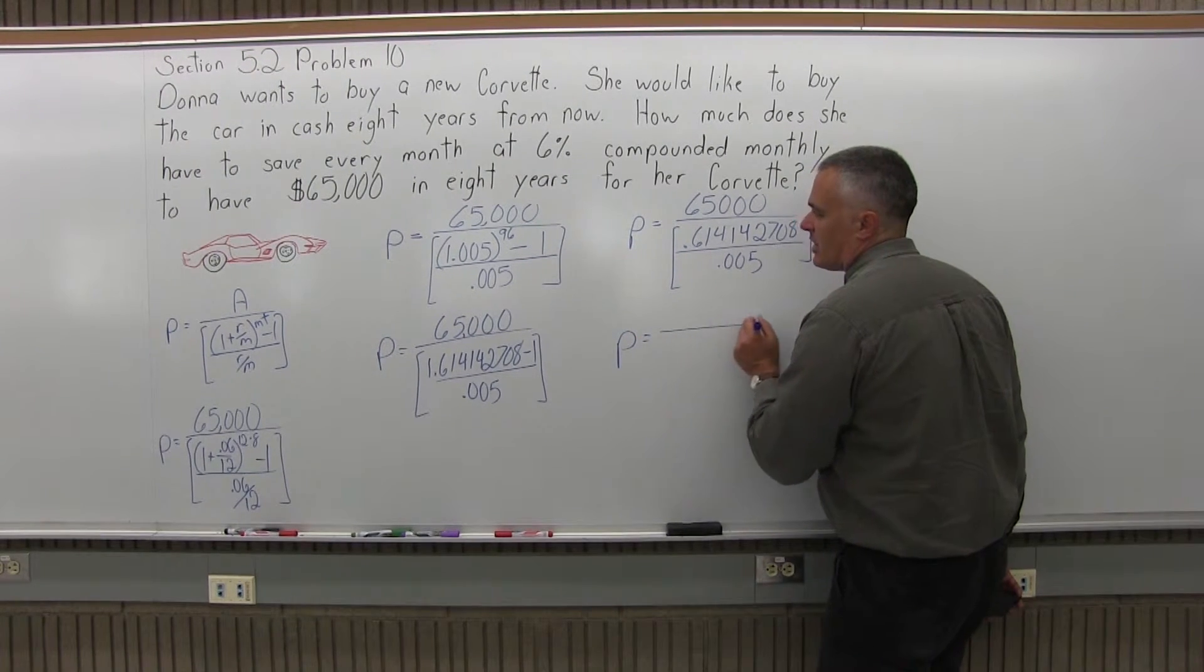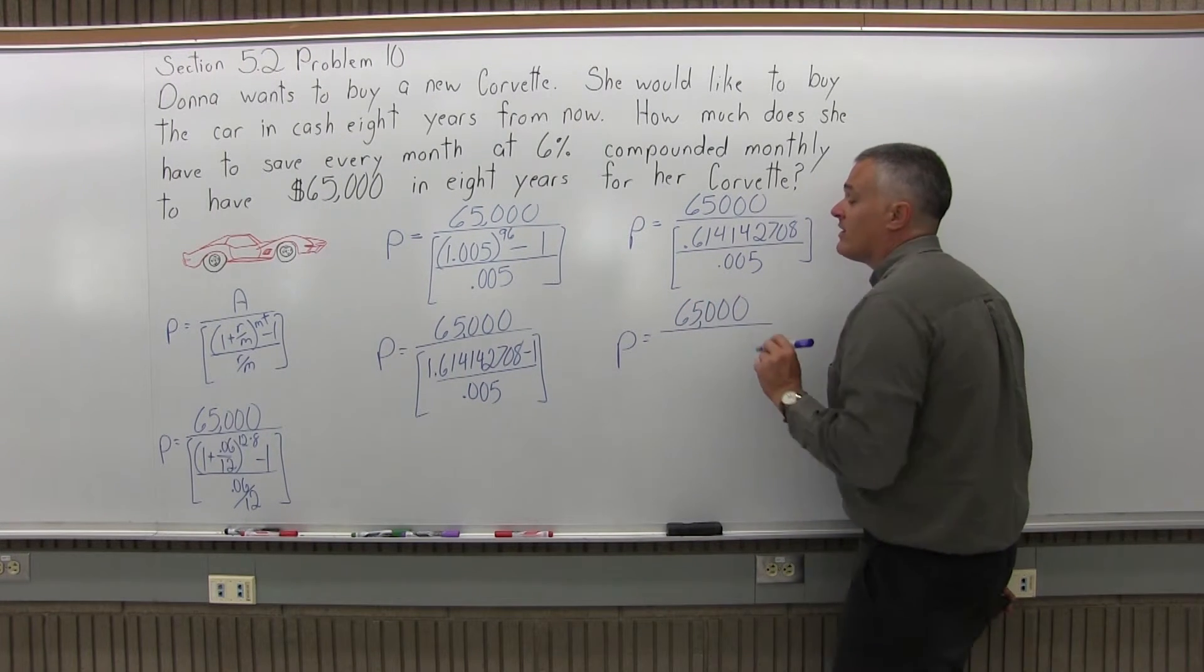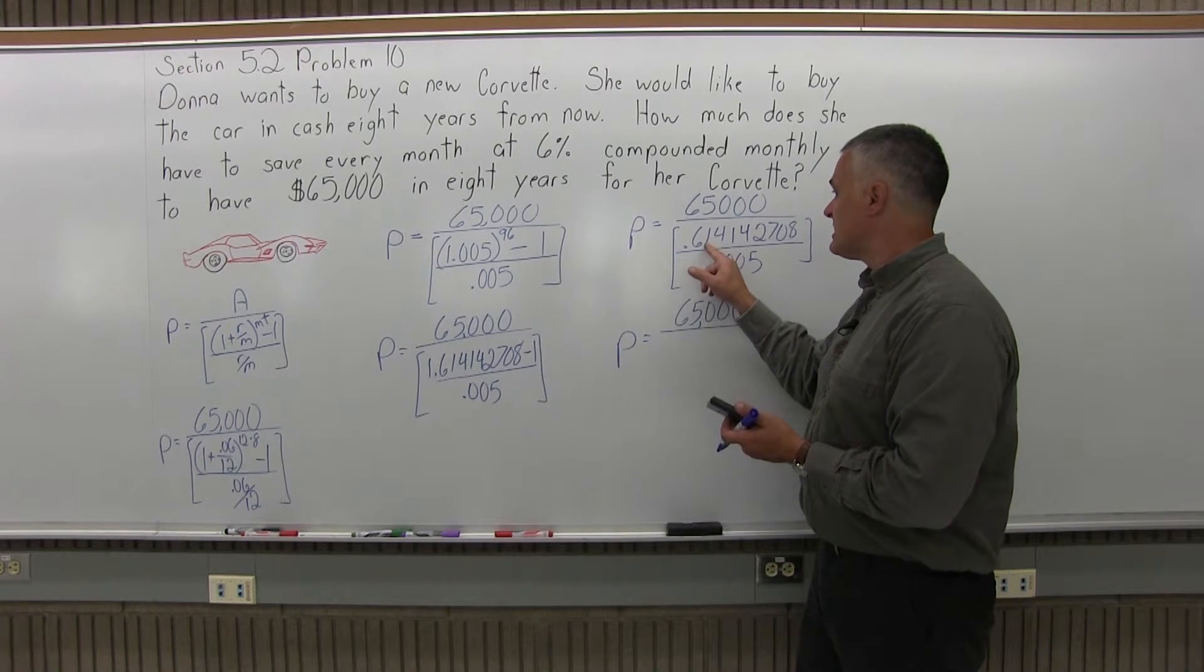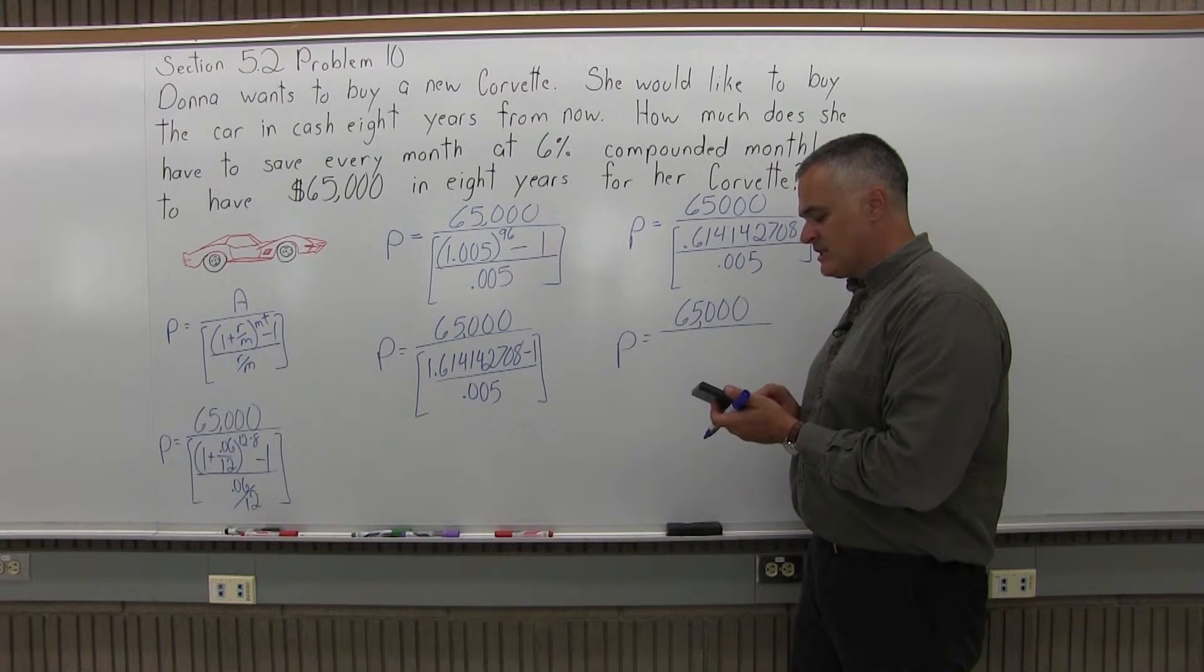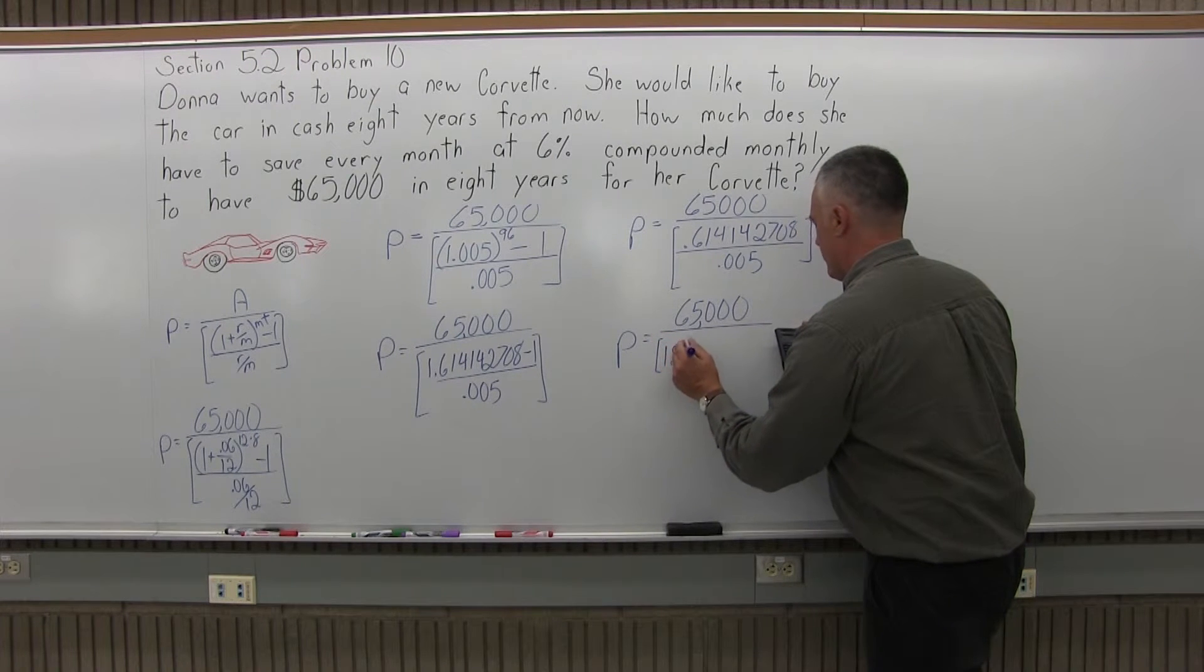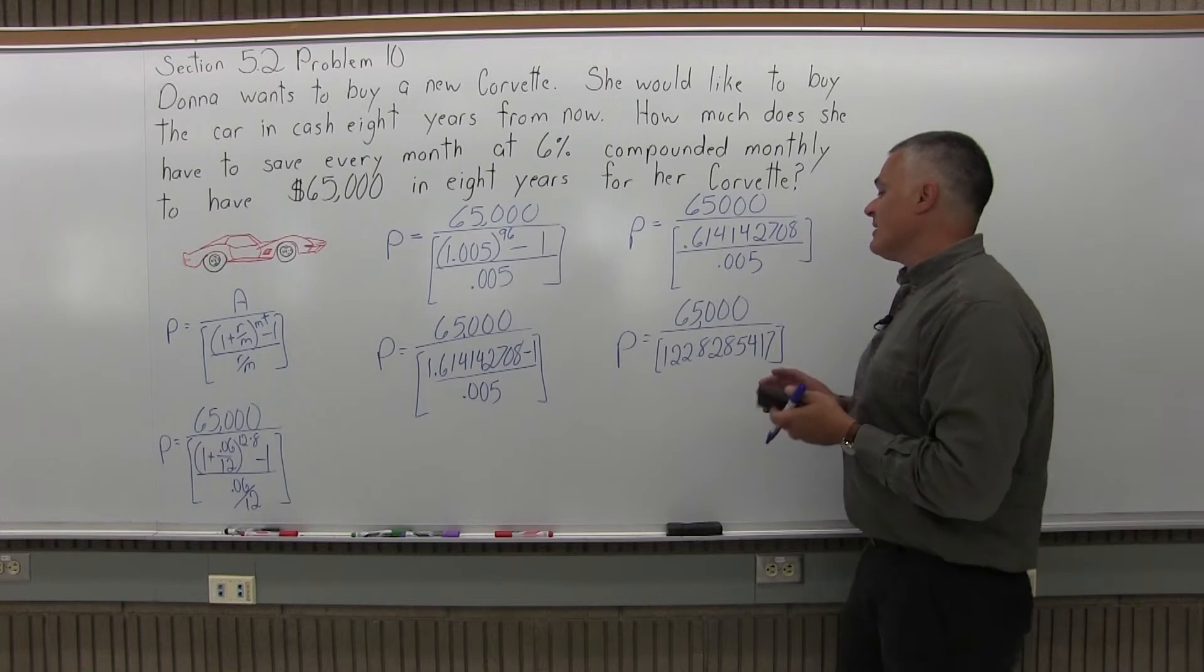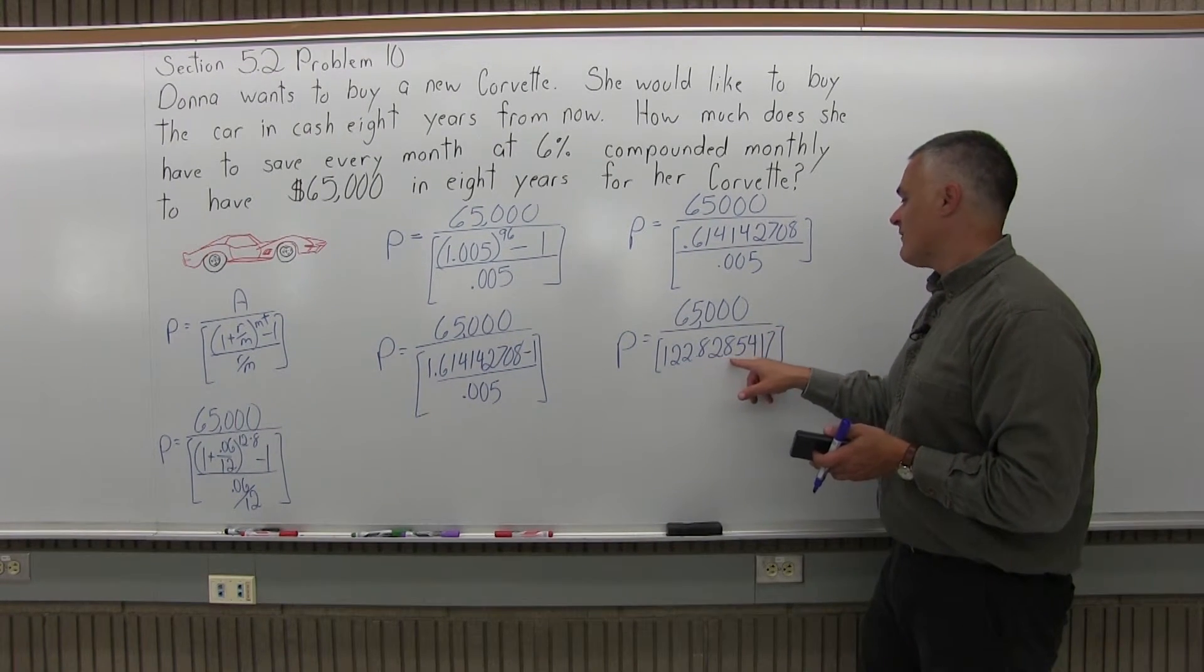And then I'll start another computation. I'll have 65,000 over, now the brackets can be reduced down to one number. And to do that for my brackets I am going to divide 0.614142708 divided by 0.005, and that's going to give me a value in the bottom of my brackets of 122.8285417.